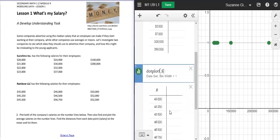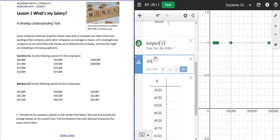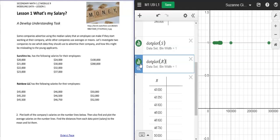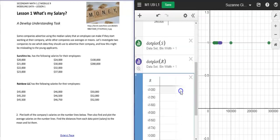If I wanted to do a dot plot of this data, I'm going to add an expression and dot plot R. These are both the same color, which makes it a little difficult to see, so I'm going to go to my settings and change the color so that they can stand out.